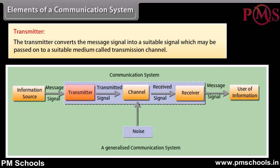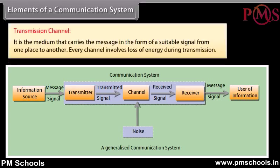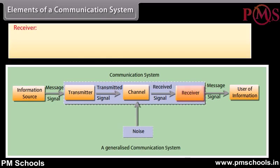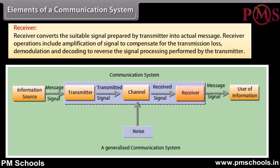Transmitter: The transmitter converts the message signal into a suitable signal which may be passed on to a suitable medium called the transmission channel. Transmission channel: It is the medium that carries the message in the form of a suitable signal from one place to another. Every channel involves loss of energy during transmission.